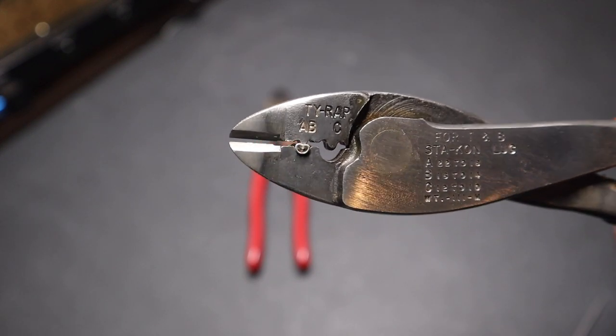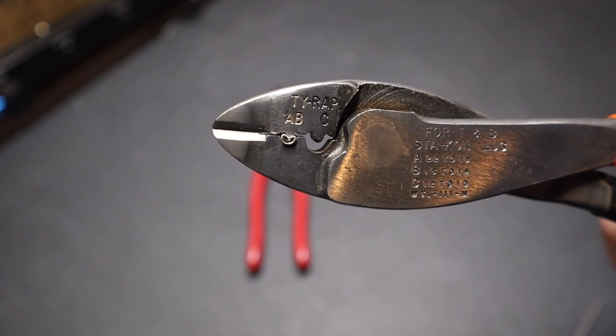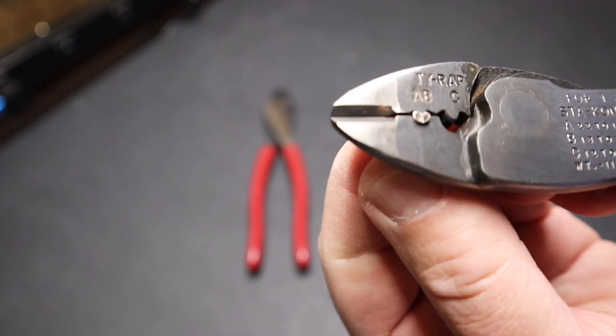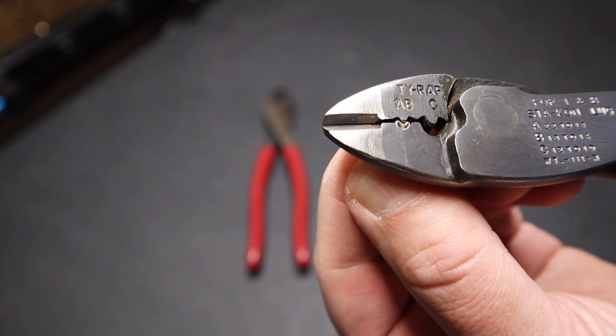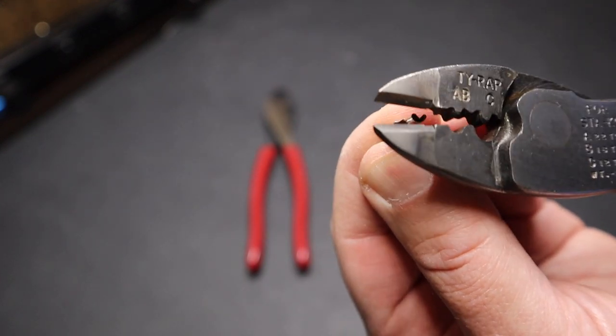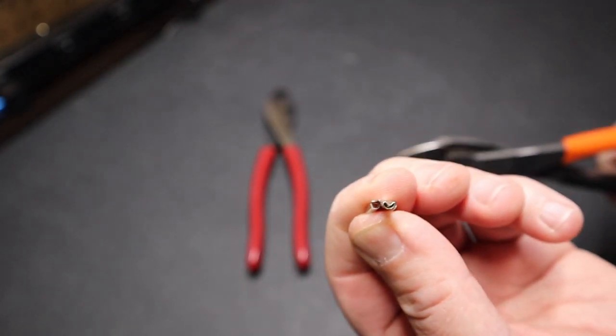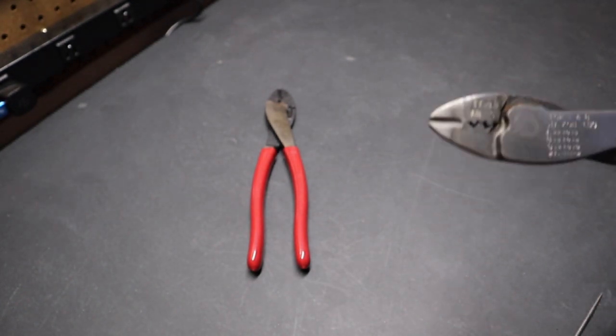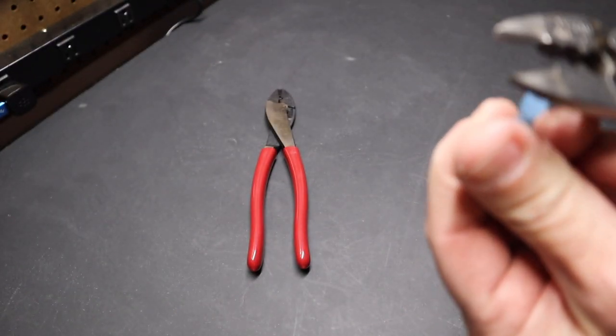You'll see here, I'll just do it here slowly, how that's going to crimp down. We can do it in a couple spots if we want. That's how the crimpers work. If we're doing insulated, it's the same process.